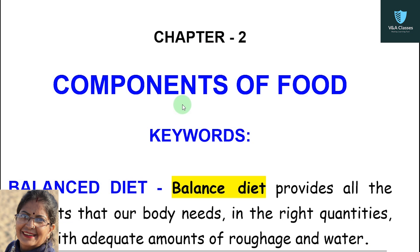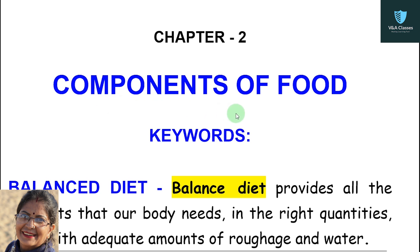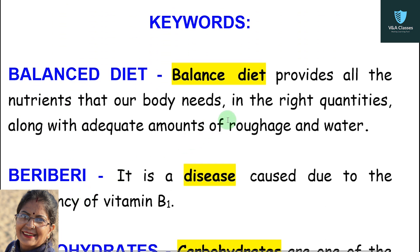Students, hope you are doing well. Today we will discuss keywords and question answers of chapter 2, that is components of food. At last there is one project for you — after completing the project you have to write it in the comment section of this video. Now let's start from keywords. The first keyword is balanced diet.